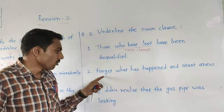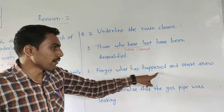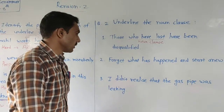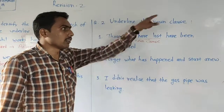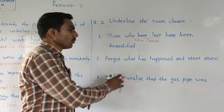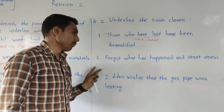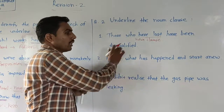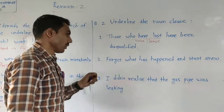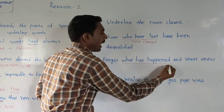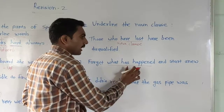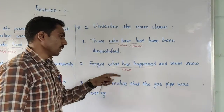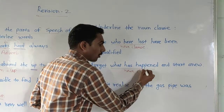Second sentence: 'Forget what has happened and start anew.' You want to underline the noun clause. 'What has happened' — it is a noun clause. You can underline 'what has happened' here.